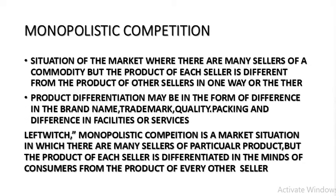Now we will understand what is monopolistic competition. It is a type of imperfect competition — a market situation in which there are many sellers of a commodity, but the product of each seller is different from the product of other sellers in one way or the other. Monopolistic competition has features of both perfect competition and monopoly. For example, Pepsi Cola has a registered trademark that cannot be used by anyone. The main feature is product differentiation. Under monopolistic competition, we can have close substitutes. Product differentiation may be in the form of brand name like Pepsi and Coca Cola, trademark, quality, packing, and difference in facility or services.